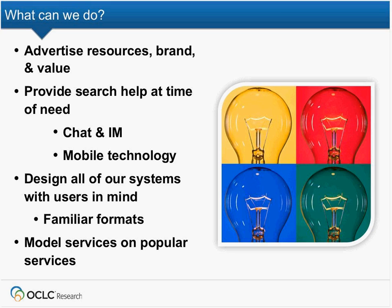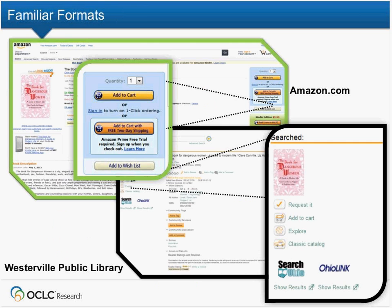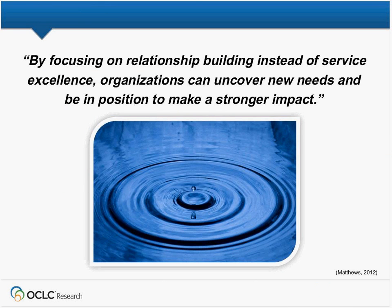People gravitate toward things that are familiar and simple. A great example is Trove — Australia's national library catalog. When we were doing interviews in Australia, Trove came up all the time. It's very simple and people just love it. Also the Amazon-like model of adding things to your cart — my public library is doing this now. It's what people are familiar with. When you come down to it, it's all about relationships.